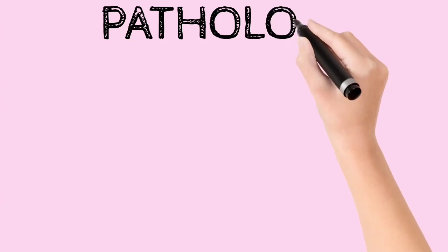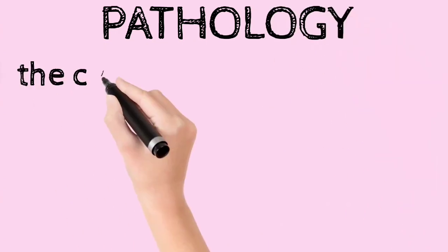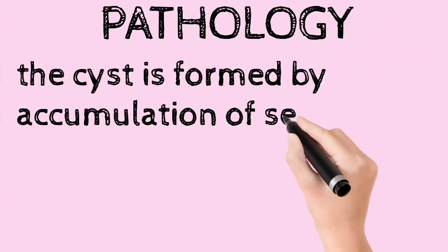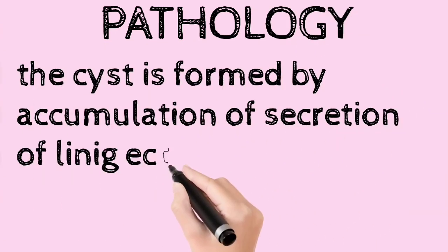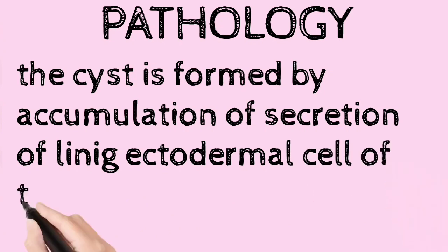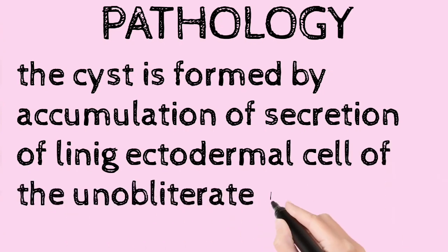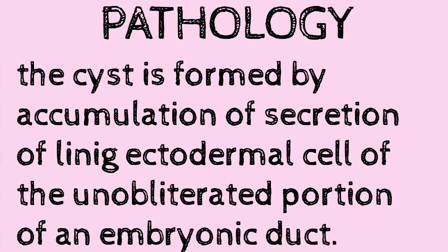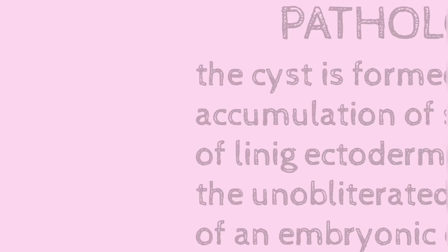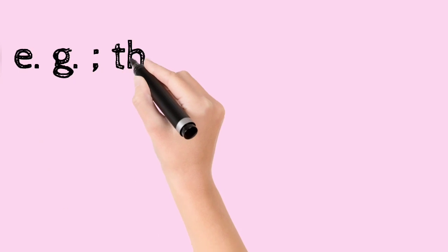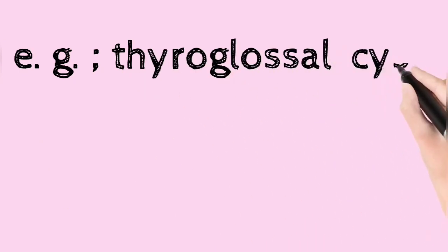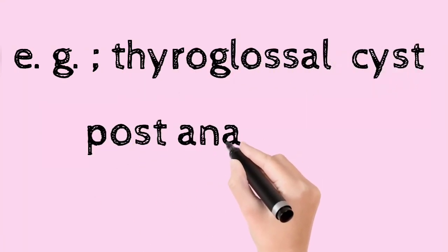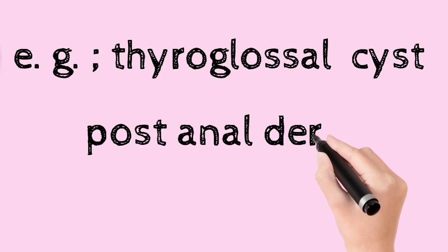The pathology: the cyst is formed by the accumulation of the secretion of lining ectodermal cells of the unobliterated portion of the embryonic duct.